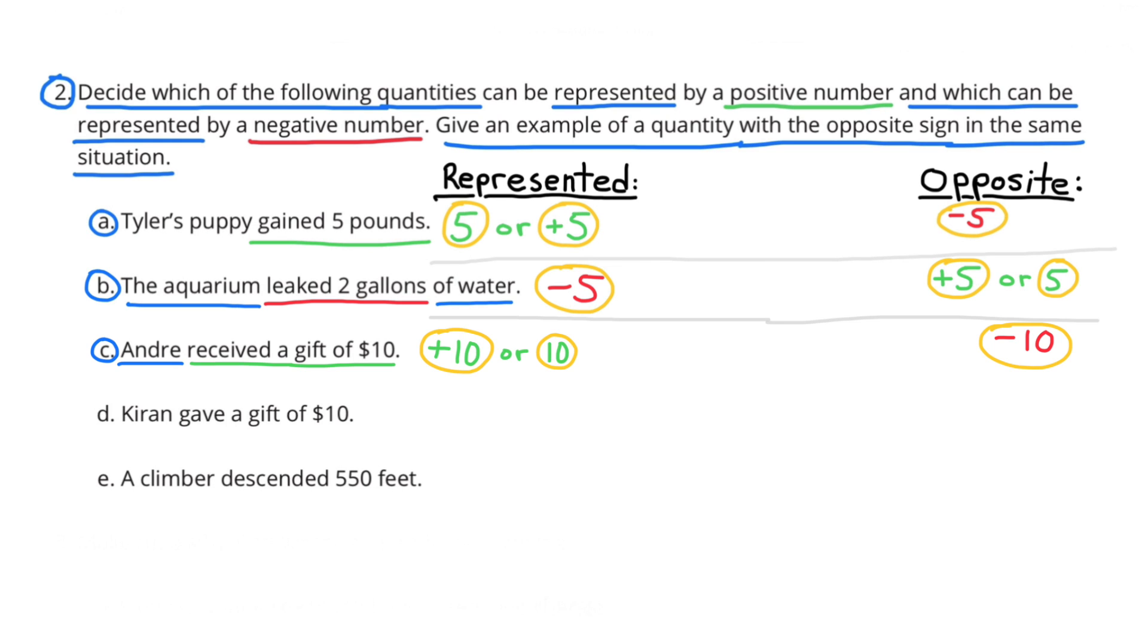C. Andre received a gift of $10. Receiving a gift of $10 would be positive 10 and the opposite of that would be negative 10.